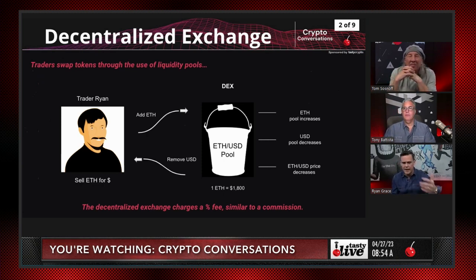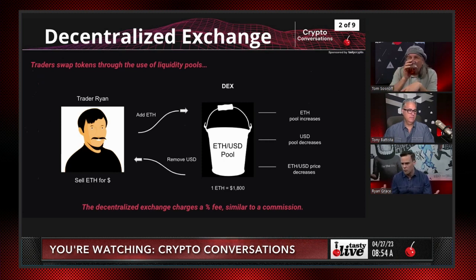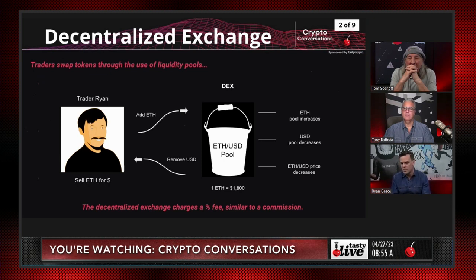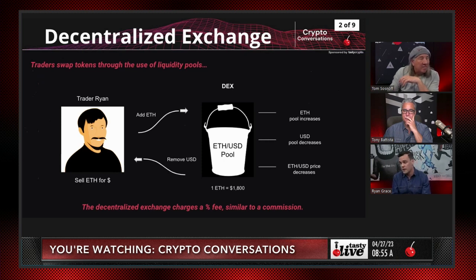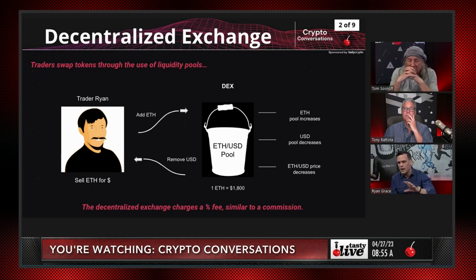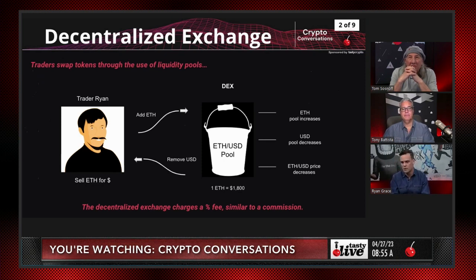When that happens, I'm adding Ethereum to the pool, so there's more Ethereum — supply goes up, US dollar supply goes down. As this rebalances based on a formula — the pricing mechanism runs off of what's called a constant product formula — the Ethereum price should decrease given there's more supply. But there's no broker, no market maker in the traditional sense, no custodian, no real counterparty. You're just going and participating in an open-source internet protocol.